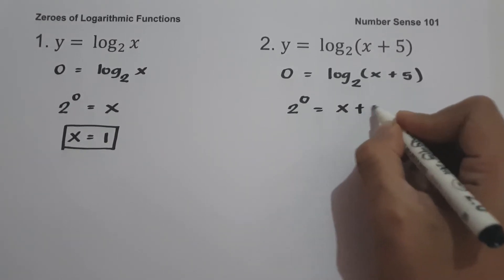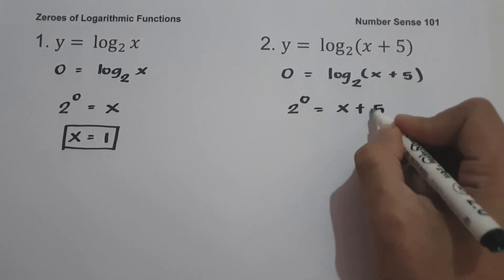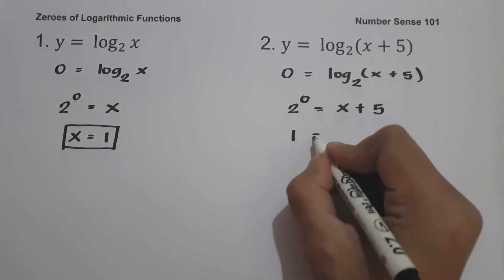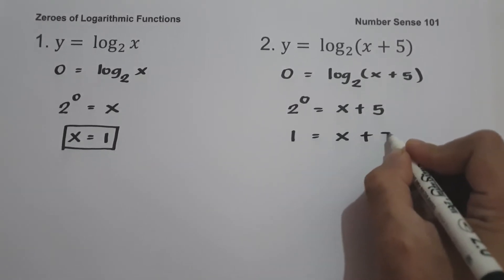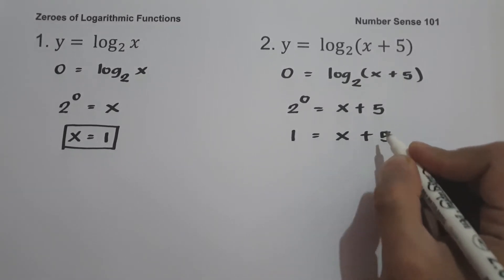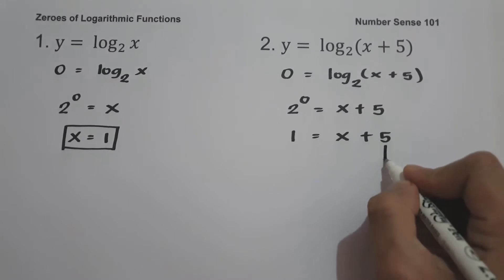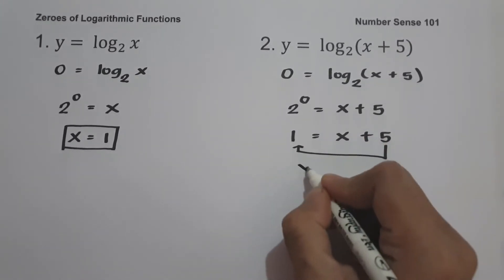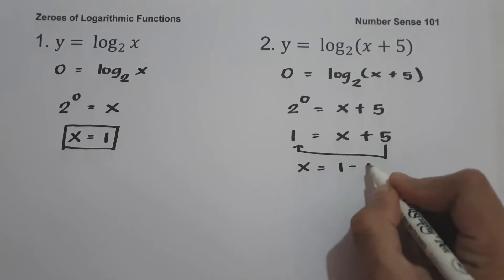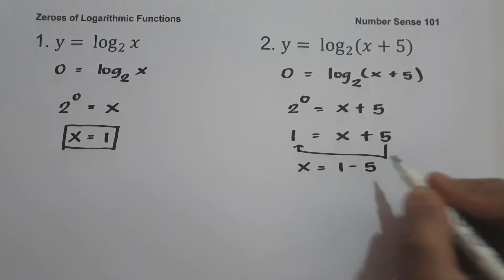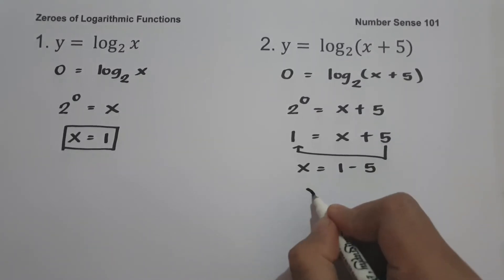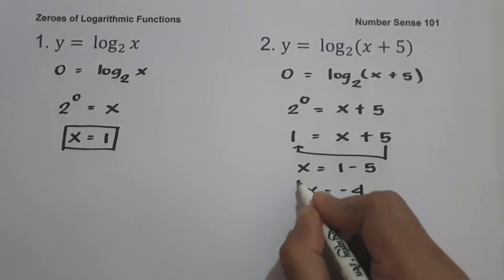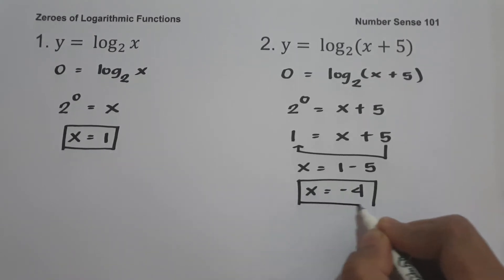Since 2 raised to 0 is 1, we have 1 equals x + 5. Let us move 5 to the other side: x equals 1 minus 5, and 1 minus 5 is negative 4. Therefore negative 4 is the zero of the given function.